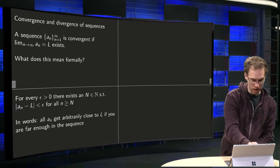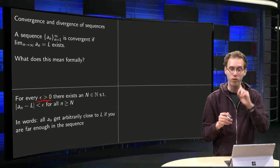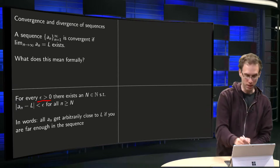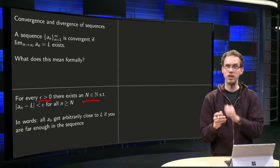For every epsilon bigger than zero—I typically think of epsilon as a small value—then we have a capital N, which is typically big. We have a capital N in the tail somewhere.